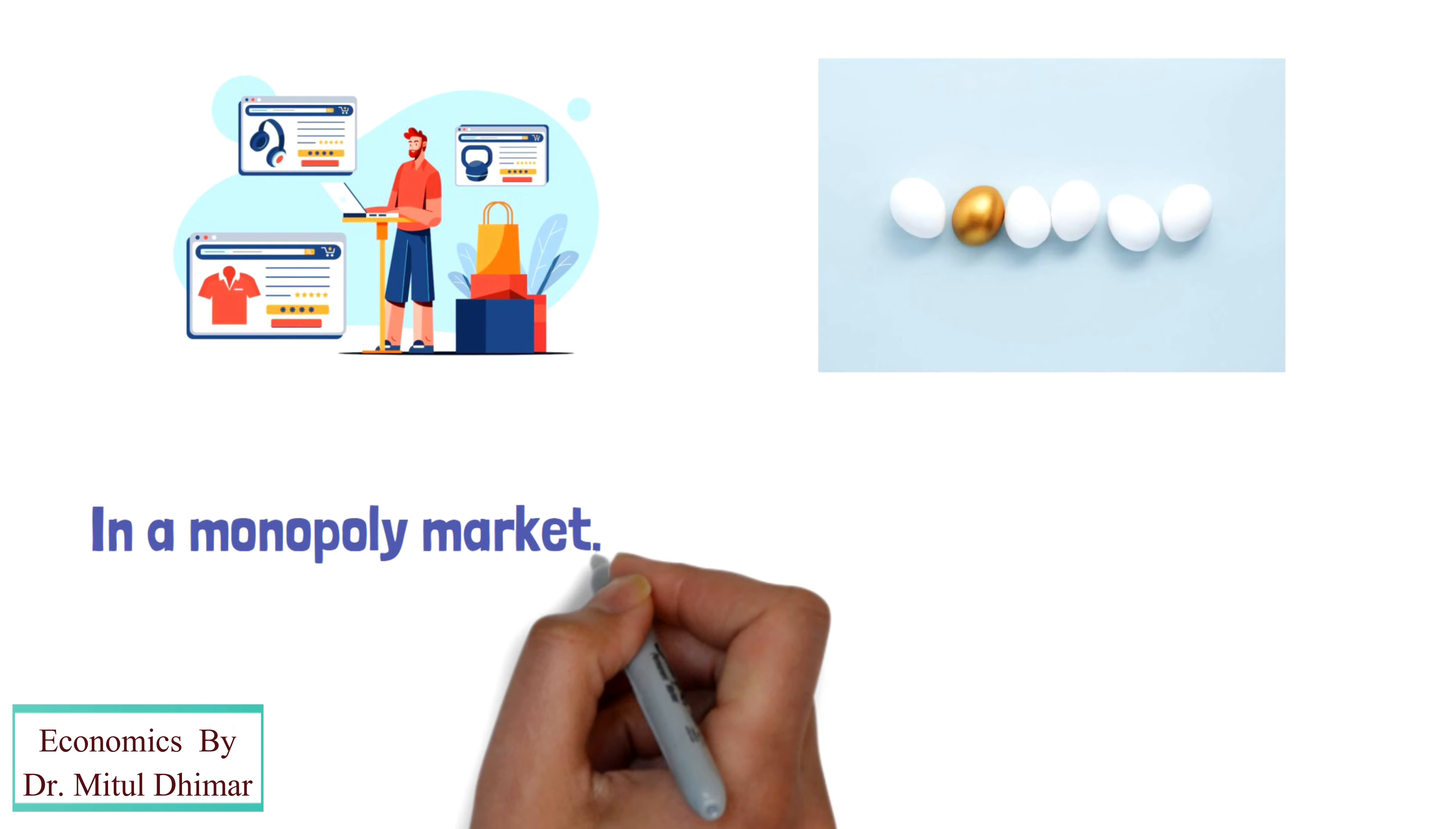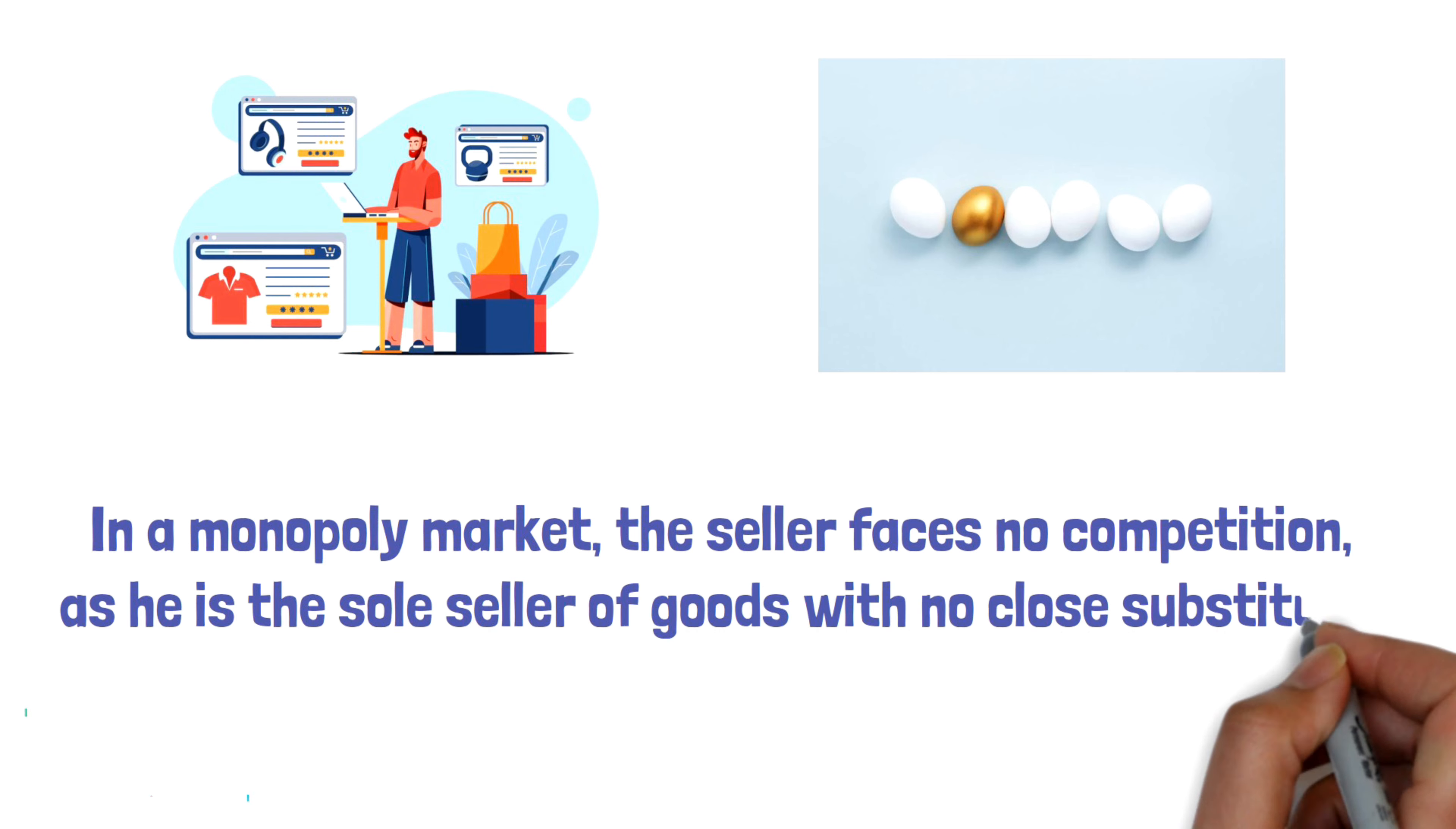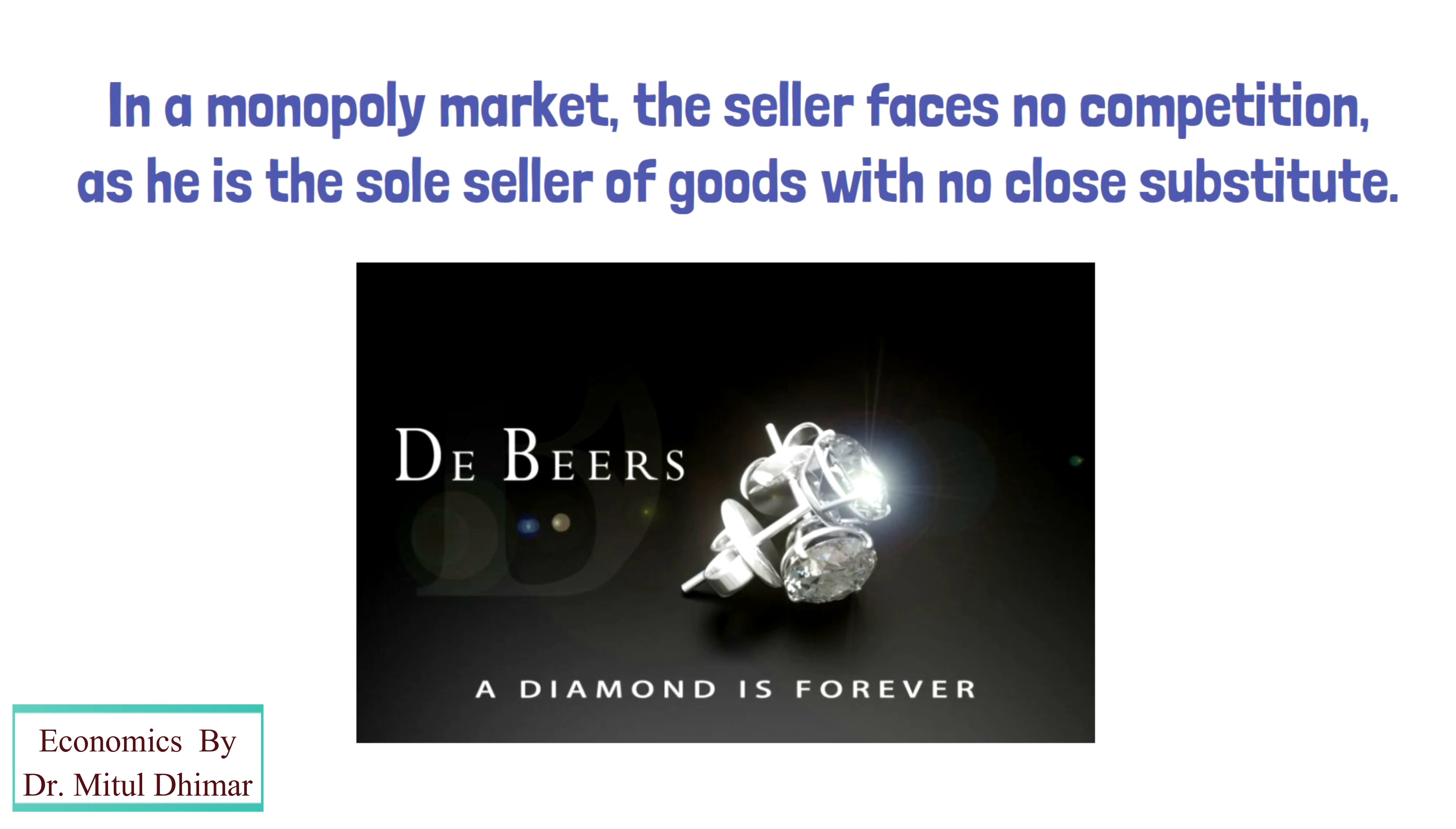In a monopoly market, the seller faces no competition as he is the sole seller of goods with no close substitute. For example, De Beers is known to have a monopoly in the diamond industry.